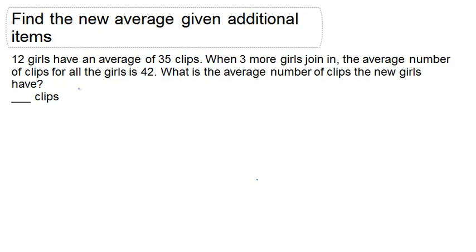So for this question, first let's look at the total number of clips for the original 12 girls. There's 35 clips on average for 12 girls, which means in total those 12 girls had 420 clips.